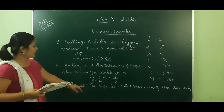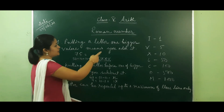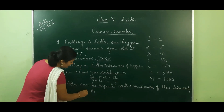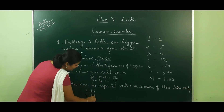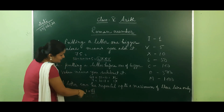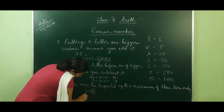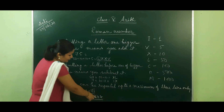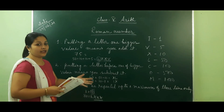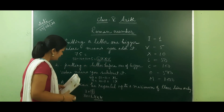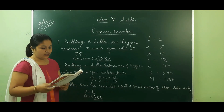Rule number three: a letter can be repeated a maximum of three times only. For example, I can be written three times as III for 3, but we do not write four I's for 4. Another example: for 80, you can write L, X, X, X — that is 50 plus 10 plus 10 plus 10 equals 80. But for 90 we do not write four X's; instead we write XC, which is C minus X, meaning 100 minus 10 equals 90.